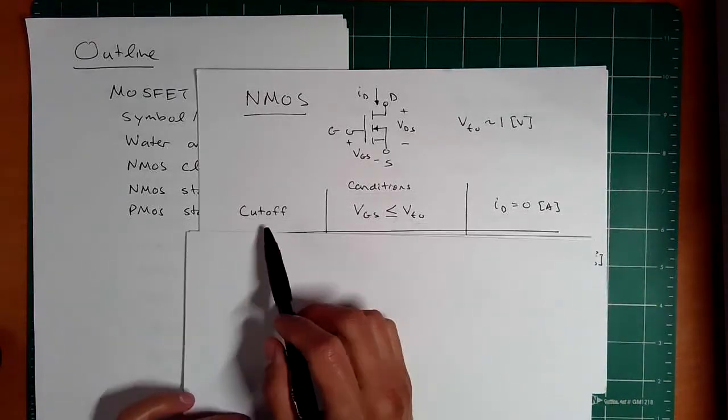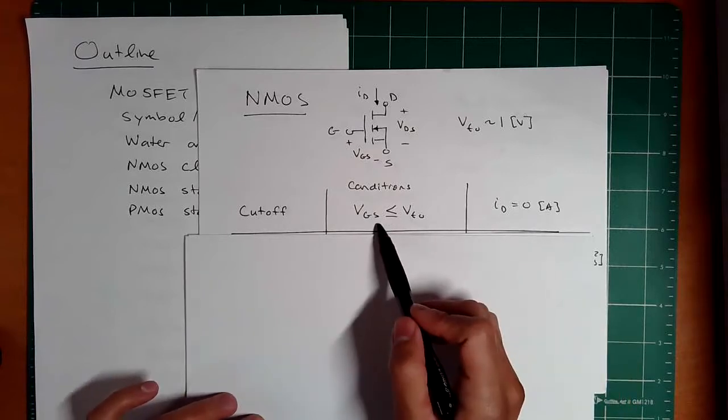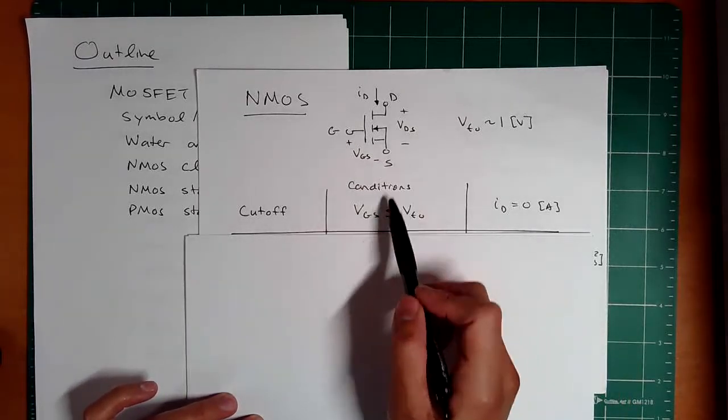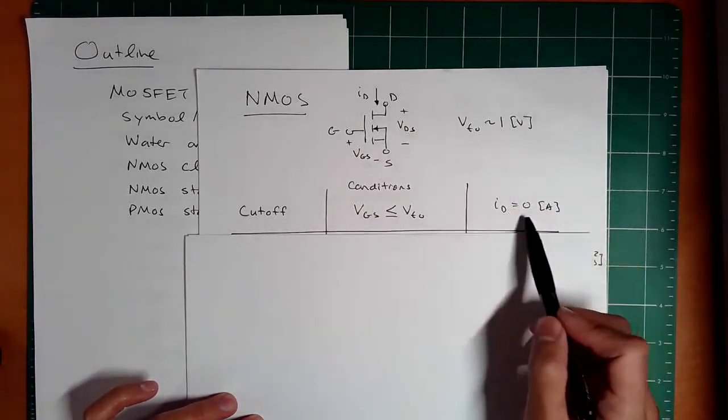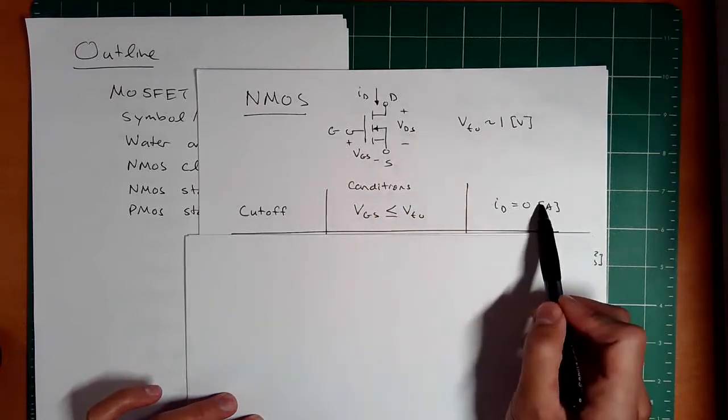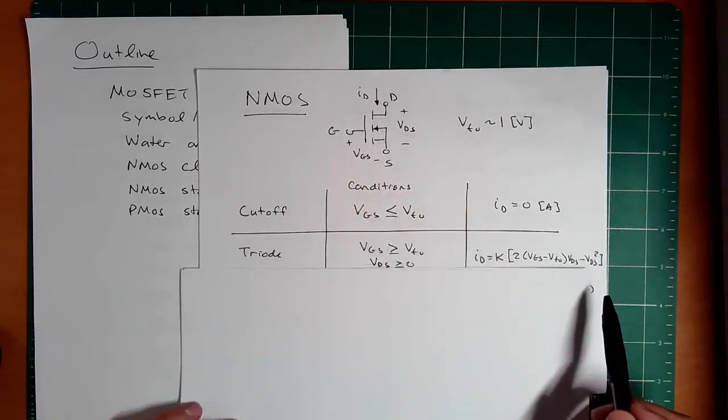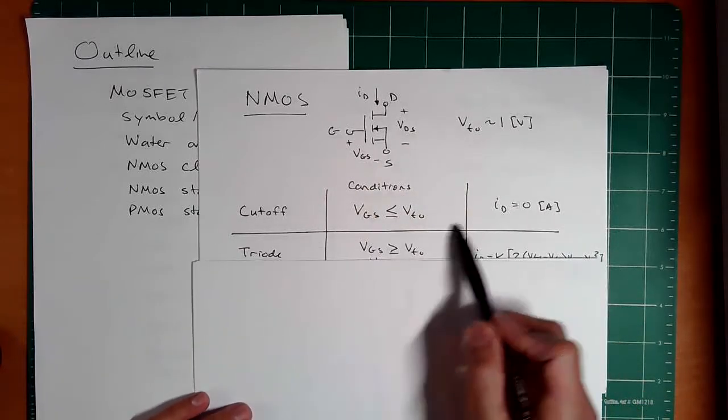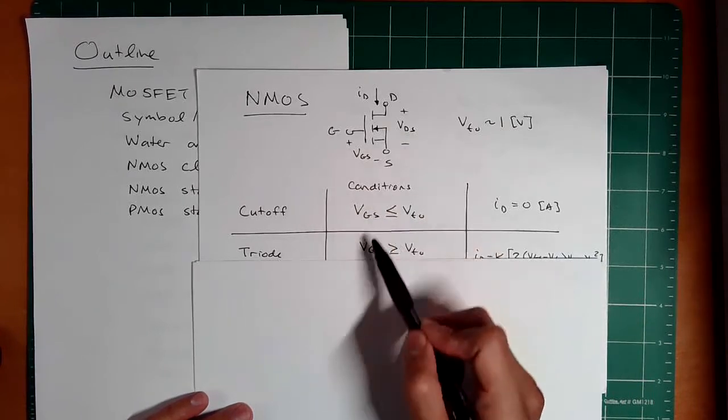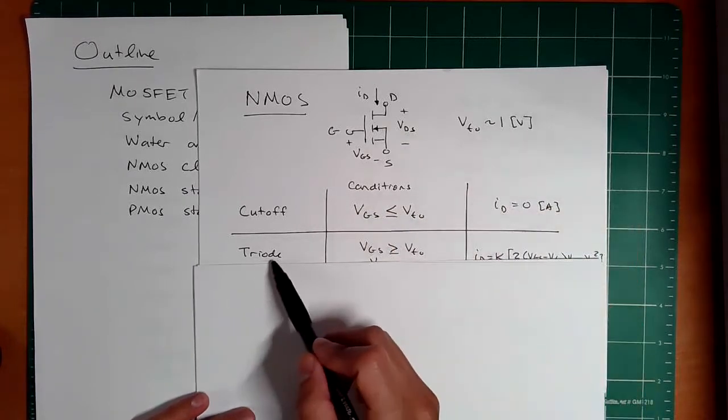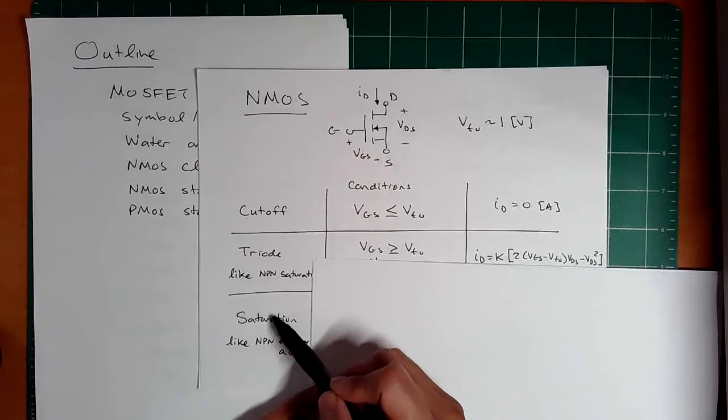And so if we're in cutoff, if the gate voltage here relative to the source is less than that threshold voltage, we will have no current. So that's easy, right? Off. Now, if we have a gate source voltage greater than the threshold, then we'll be on of some sort, either in triode or saturation.